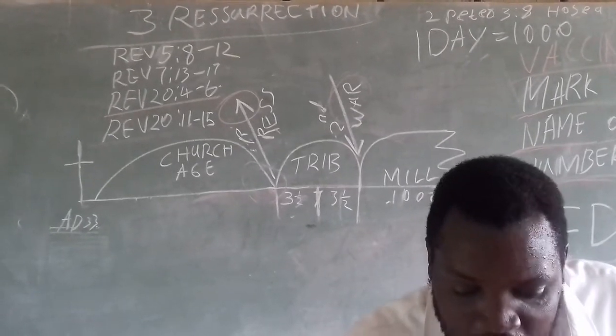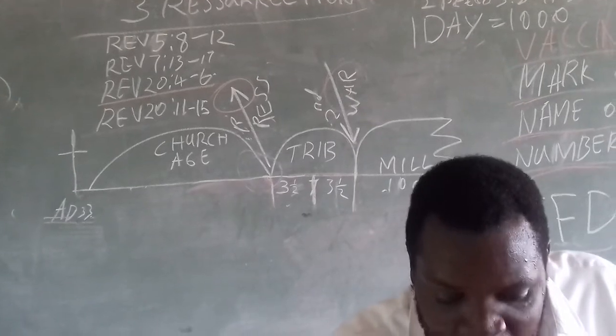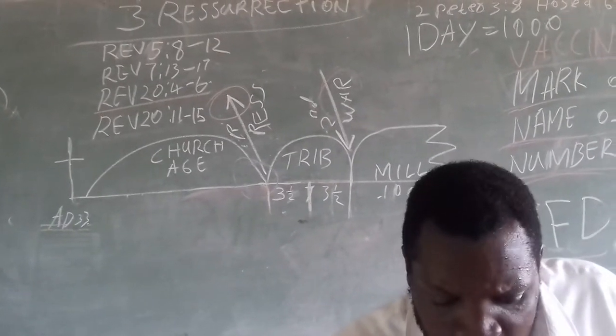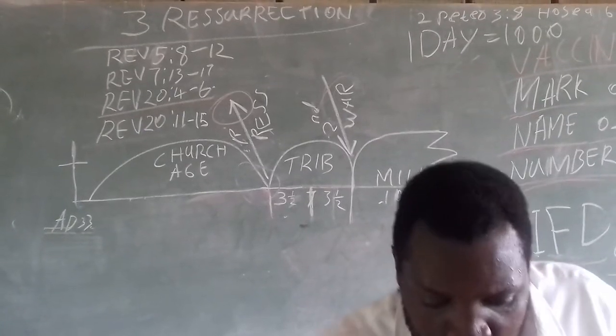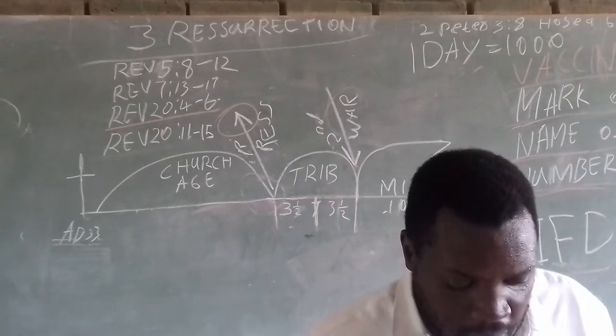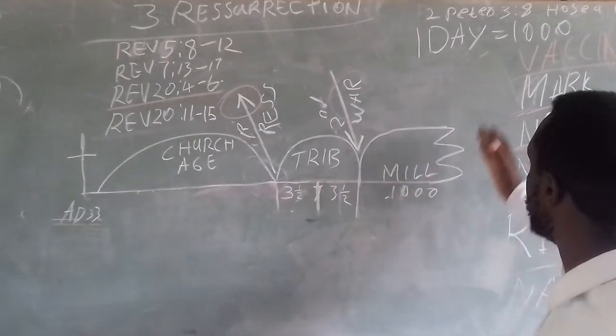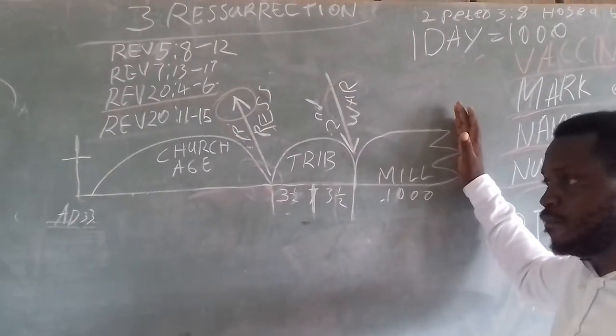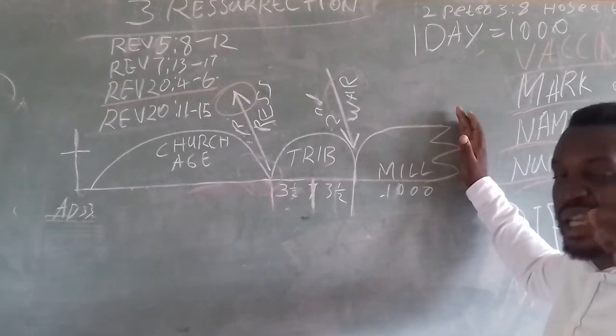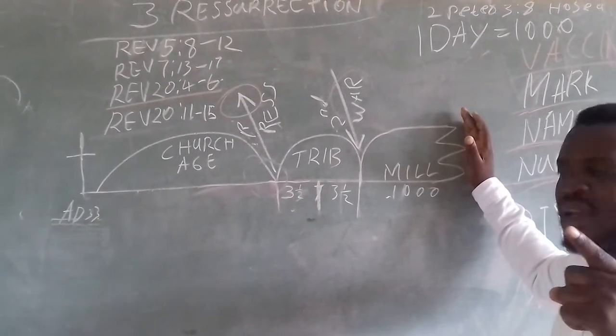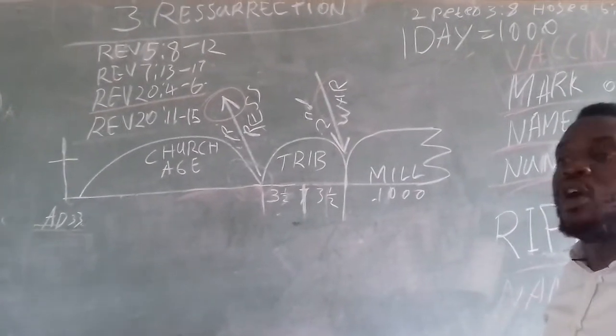The sea gave up the dead who were in it, and death and Hades delivered up the dead who were in them, and they were judged each one according to his works. So remember what is happening here: after one thousand years, everybody will be resurrected and everybody has eternal life. They are immortal, they can no longer die. The problem is, even though they cannot die, they are not in heaven.